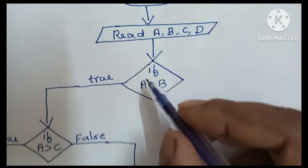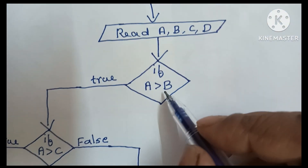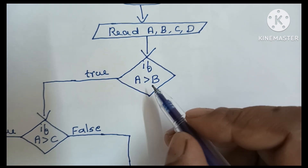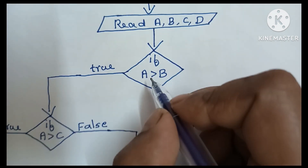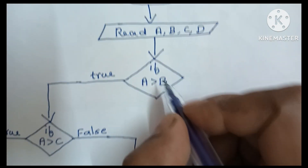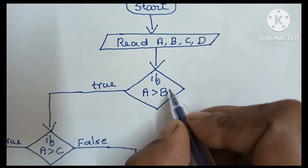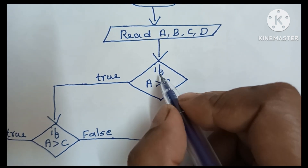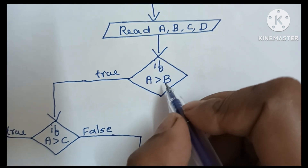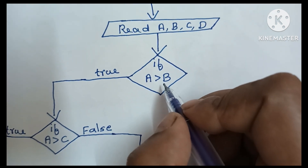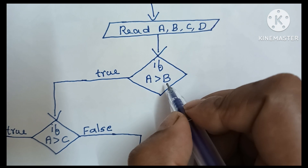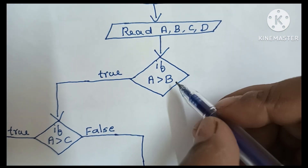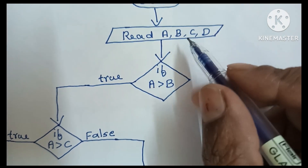Now, if A greater than B is false, then B is greater. So the next step is to compare B with C.